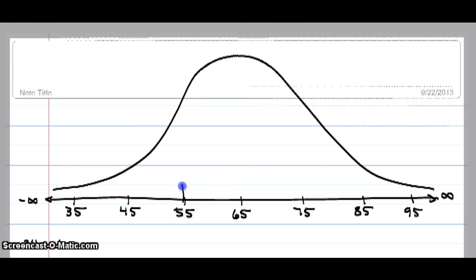If we go one standard deviation down using that same data where the mean is 65, standard deviation is 10. If this space is 68%, then if I cut it in half at the mean, I have 34% and 34%.